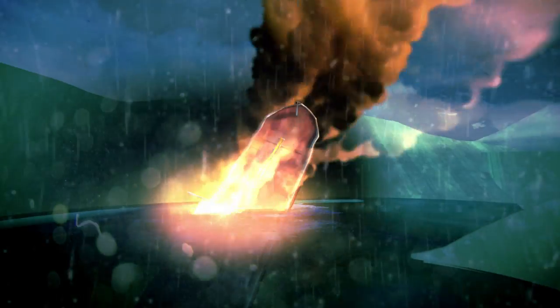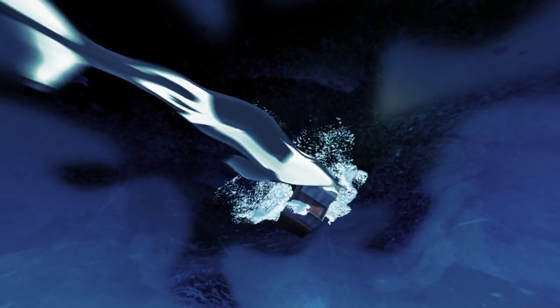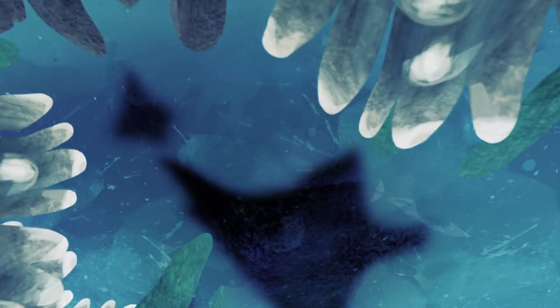For the cetaceans of the Great Bear Rainforest, such an oil spill would be especially disastrous. Critical habitat destroyed and the marine food chain contaminated. The oil-slicked waters would then suffocate and starve these sensitive animals instead of sustaining them.